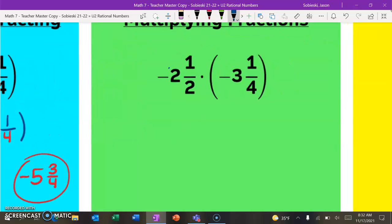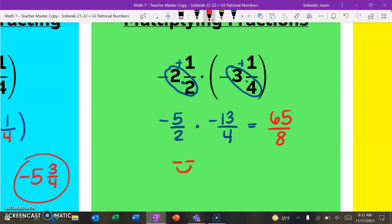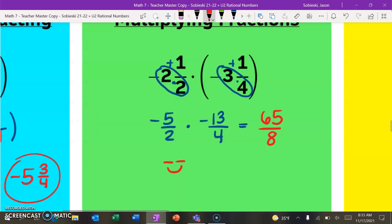All right, so multiplying, we need to switch them into improper fractions. Take our denominator times the whole number, then add the numerator. This would give us -5/2 times -13/4. You could see about canceling anything out. It doesn't look like we could do that, so we can just multiply across. First of all, you have two negatives, so our sign rules say negative and negative will be happy. This will give us 65 in the numerator over 8 in the denominator. It doesn't look like we can simplify that too much, so we can just leave it for the sake of this example.